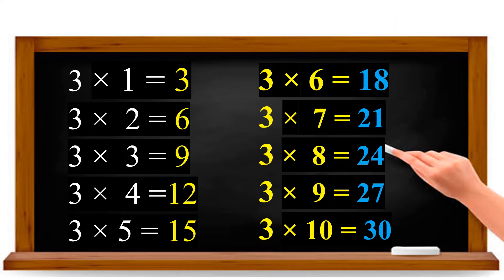Now we are going to read the 3 table together. 3 ones are 3. 3 twos are 6. 3 threes are 9. 3 fours are 12. 3 fives are 15. 3 sixes are 18. 3 sevens are 21. 3 eights are 24. 3 nines are 27. 3 tens are 30. Very good!